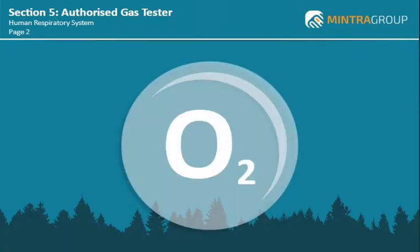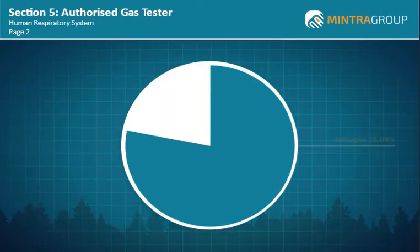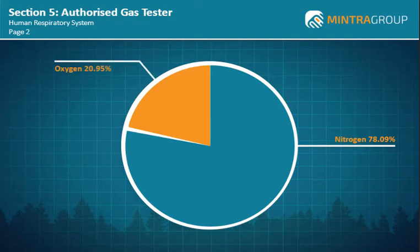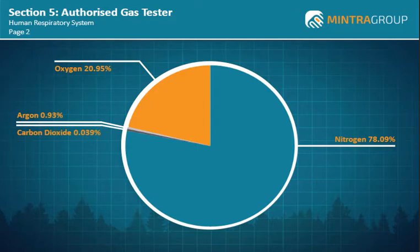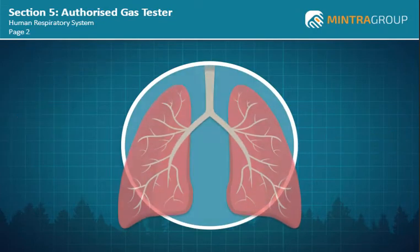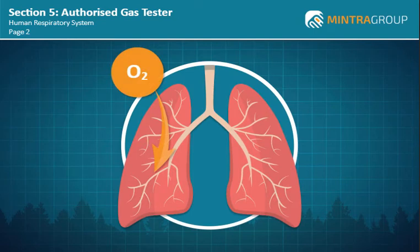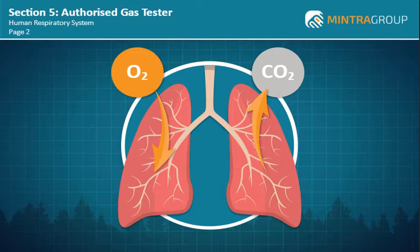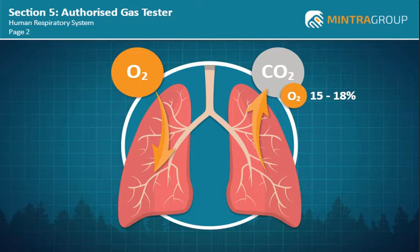Oxygen is essential for humans to survive and our atmosphere is made up of 78.09% nitrogen, 20.95% oxygen, 0.93% argon and 0.039% carbon dioxide by volume. The human respiratory system extracts oxygen from the air and in return expels carbon dioxide. However, it is not a direct exchange — we still breathe out around 15-18% oxygen along with the expelled carbon dioxide. The exact amount is dependent upon your fitness levels and amount of energy expenditure.